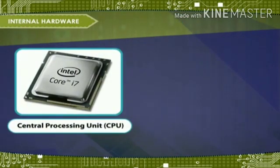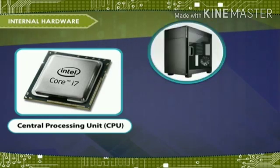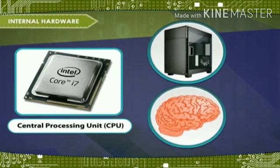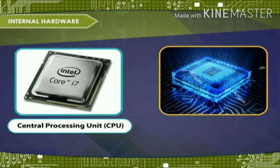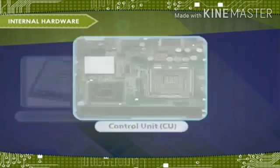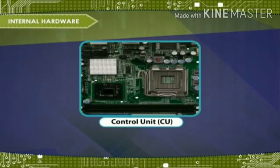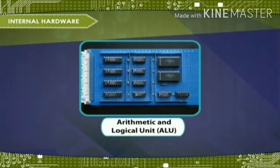The main processing device is the CPU — Central Processing Unit. It is called the brain of the computer. It processes the inputs given to the computer. It has three main components: Control Unit (CU), Arithmetic and Logical Unit (ALU), and Memory Unit (MU).